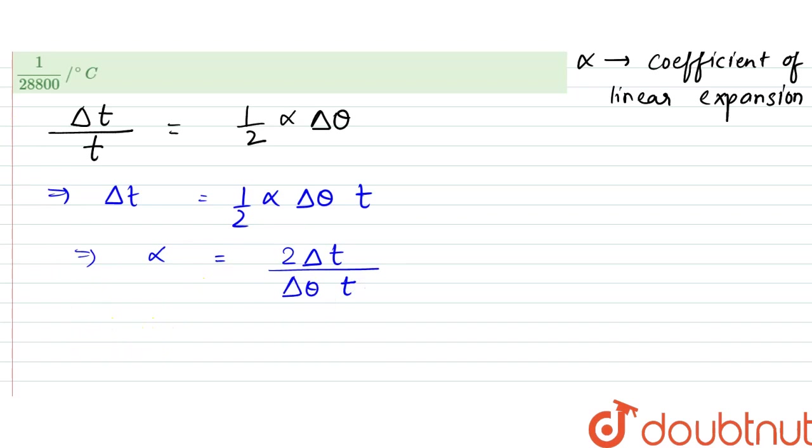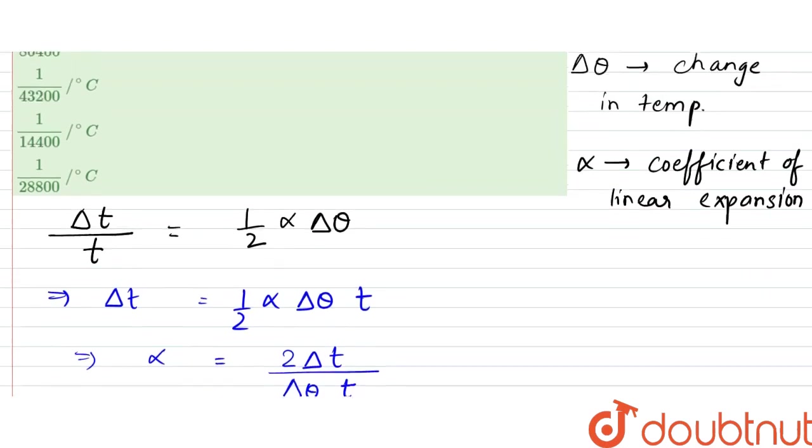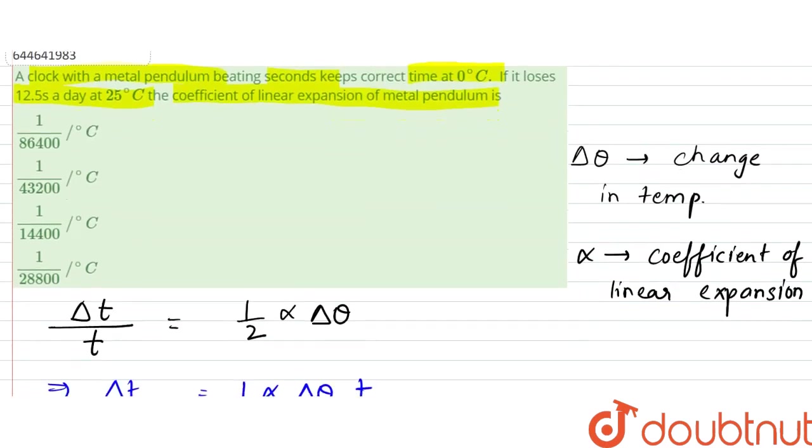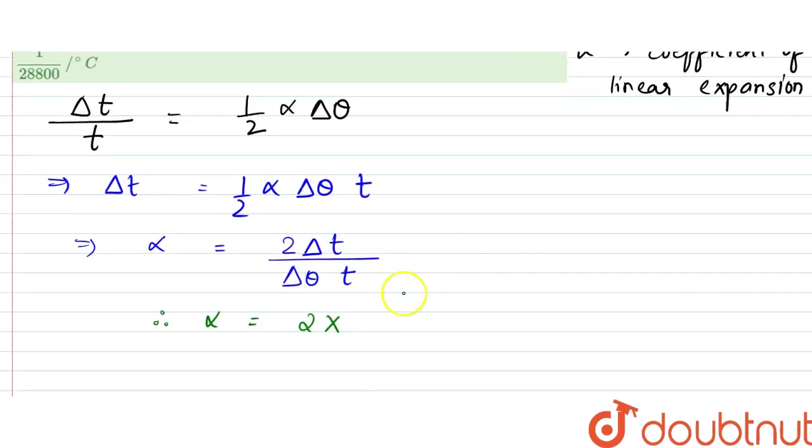So the loss or gain is 12.5 seconds divided by delta theta, the change in temperature.